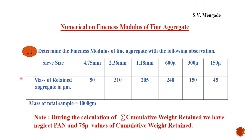On each sieve there is some weight retained. On the first sieve, the 4.75 mm sieve, 50 grams of weight is retained, and the addition of all weight retains on the given sieves is 1000 grams. We have to calculate the Fineness Modulus of Fine Aggregate.